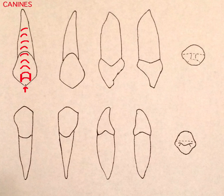This is another very important concept. From each cusp tip you will have four cusp ridges. Going down the facial aspect of the crown is the facial cusp ridge.